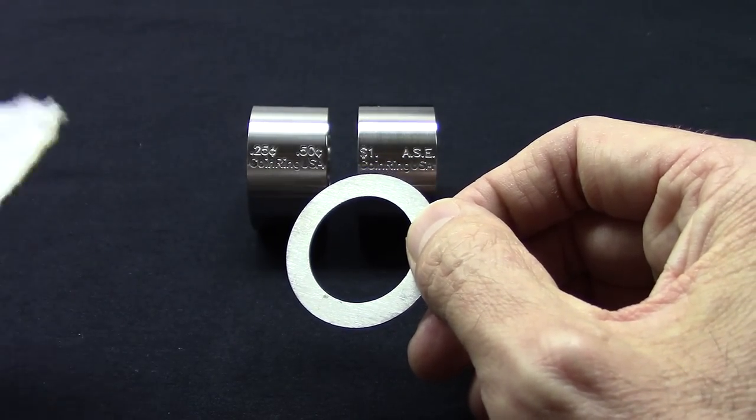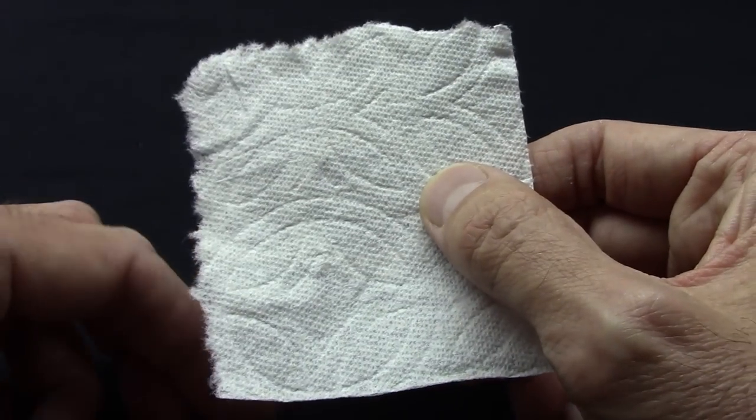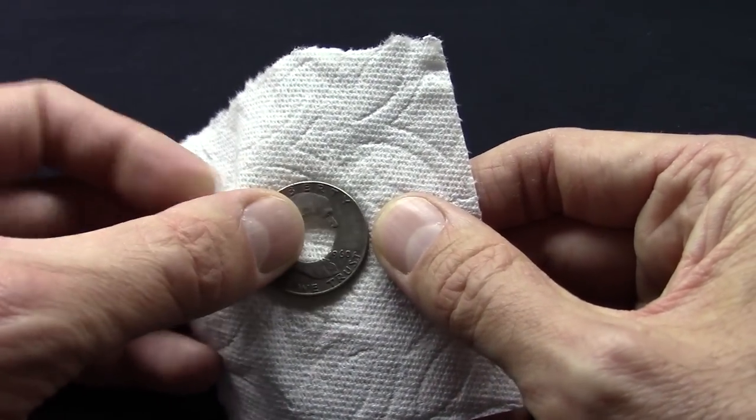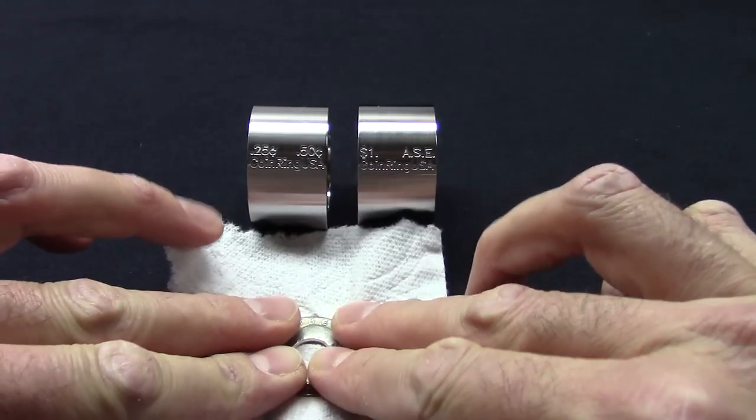take the piece of paper towel, simply put it over the washer, center washer, take your coin and push it in really good, lay it flat if you want.